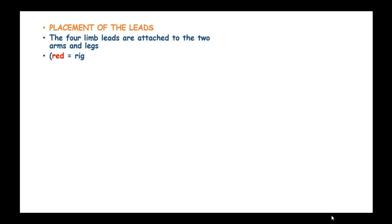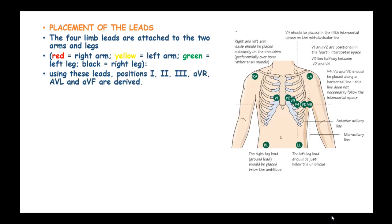The four limb leads are attached to the two arms and legs. The red is attached to the right arm, the yellow one on the left arm, the green on the left leg and black on the right leg. Using these leads, positions I, II, III and AVR, AVL and AVF are obtained.